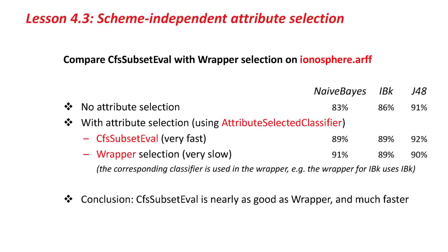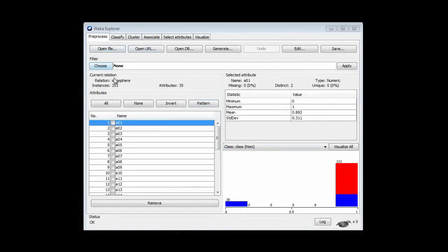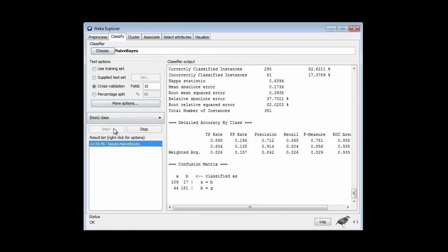Let's try it. Let's compare CFSSubsetEval with the wrapper selection on the ionosphere data. We're going to look first at Naive Bayes. Coming over to Weka here, I've got the ionosphere data open, and I'm going to classify that with Naive Bayes, Standard Naive Bayes, and when I do that I get 83%.